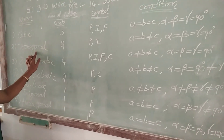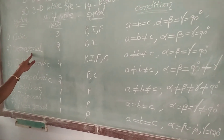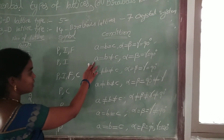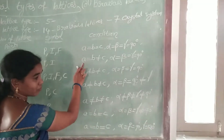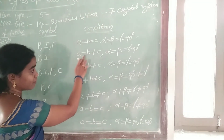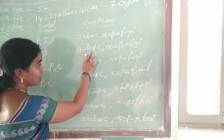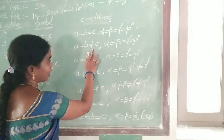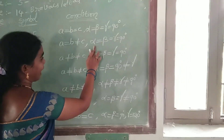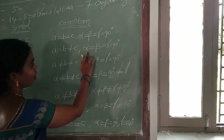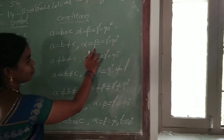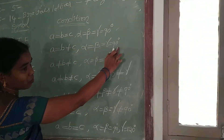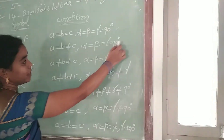Second one: tetragonal crystal system. The condition is A is equal to B, not equal to C, and the angles alpha is equal to beta is equal to gamma is equal to 90 degrees.